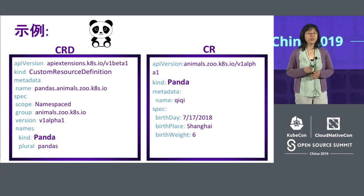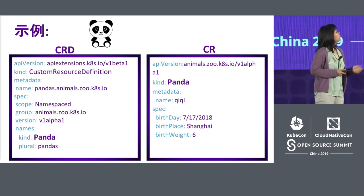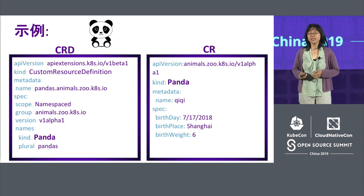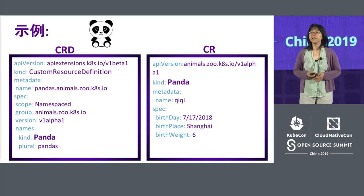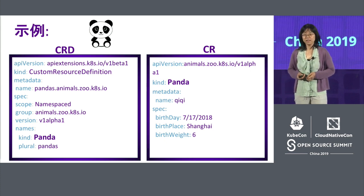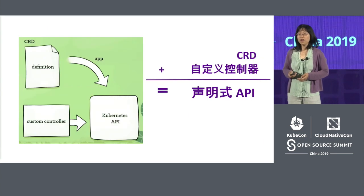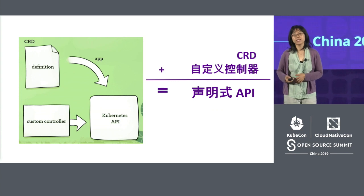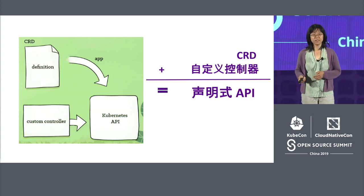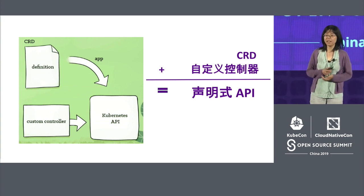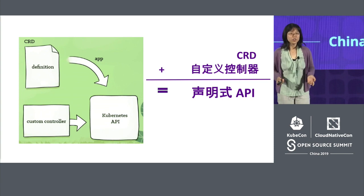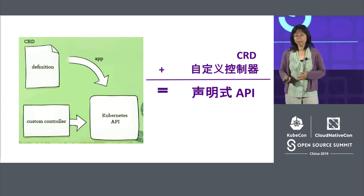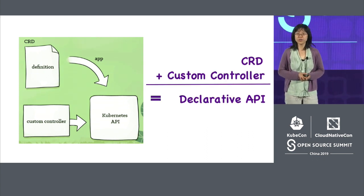Let's take a look at an example with this cute panda — everyone loves pandas. On the left side, the CRD tells you we're going to define a new kind called Panda and add it into the animals group. On the right side, the CR defines the detailed spec of this new resource — panda — with a name and spec fields like birthday, birthplace, and weight. With CRD you can add the custom resource into the API and use it just like any other Kubernetes API. But it doesn't do anything until you add a custom controller. With CRD and a custom controller you get a declarative API — the API spec defines the desired state, and the controller moves the actual state towards the desired state.